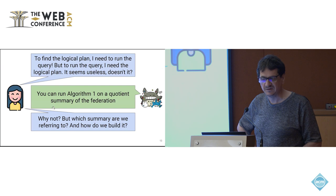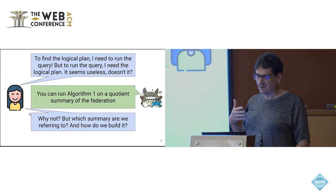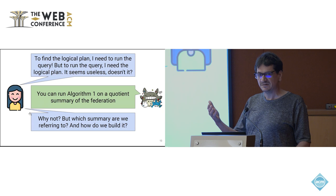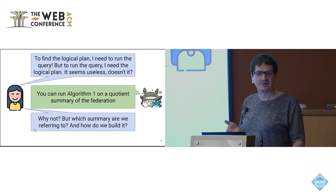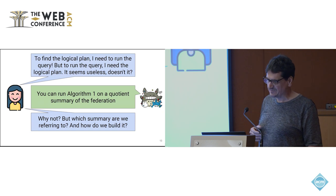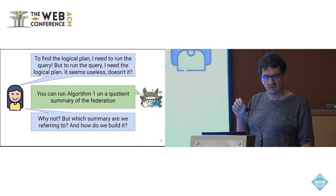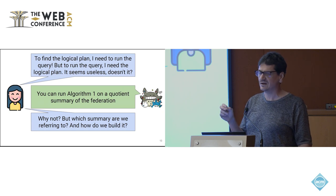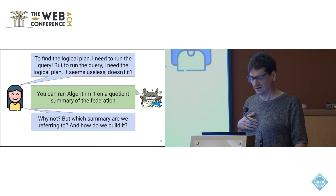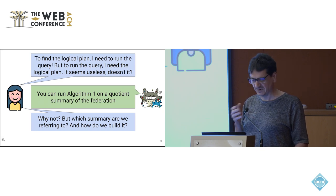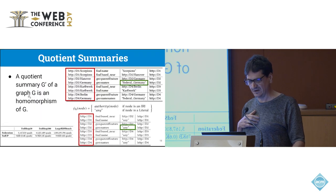But there is a big issue with this approach. To find your super plan, you need the result. But to find the result, you need the plan. So there is a vicious circle. It cannot work. So the trick to break the vicious circle is to run the query, but not on the real data. Run the query on a quotient summary. It's a summary. We will have false positives. But because we use quotient summary, we will have no false negatives.